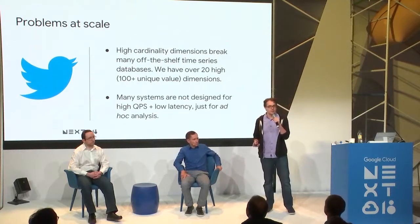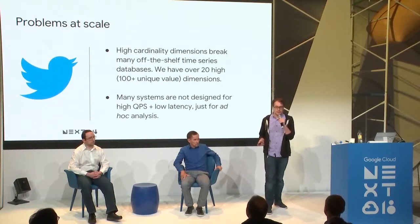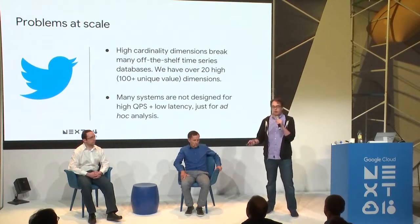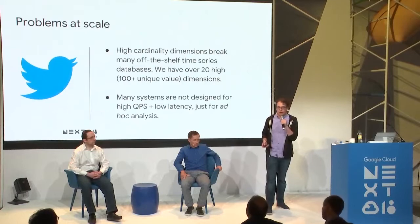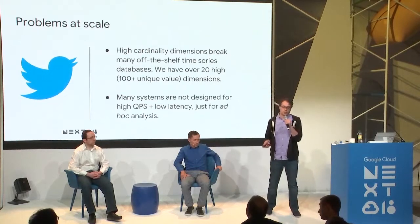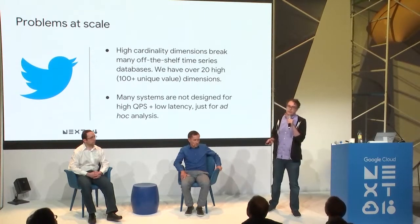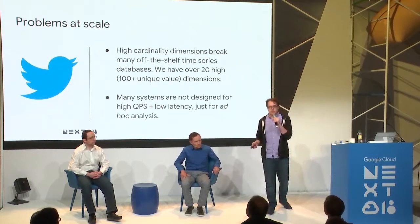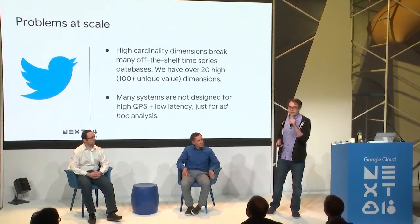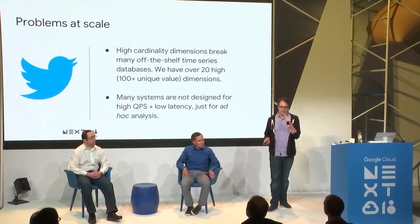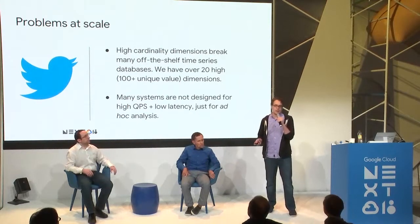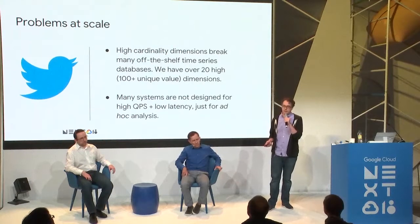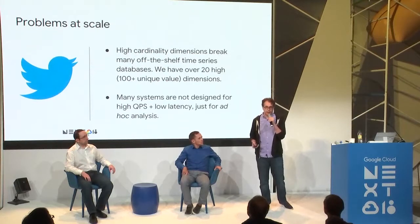The dimensionality of this data is very high — at least 20 high-cardinality dimensions like geography and interests, plus another 20 or so lower-cardinality dimensions. Many systems we looked at weren't designed for this level of QPS and latency; they were more suited to ad hoc internal analytics where a business analyst runs a couple of queries per minute.